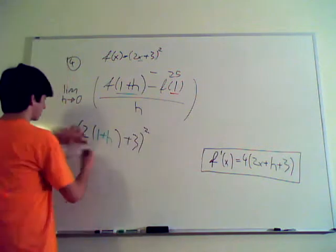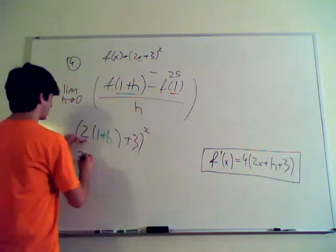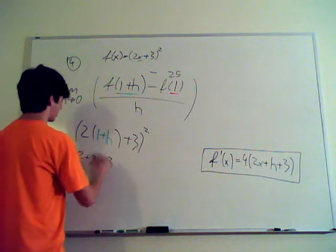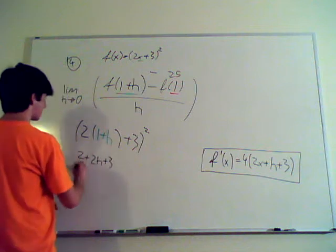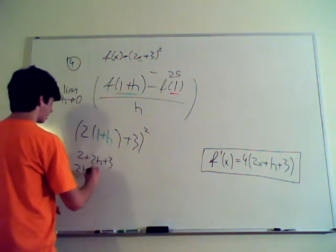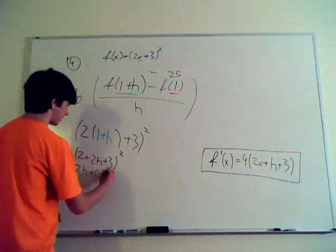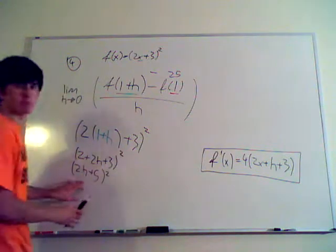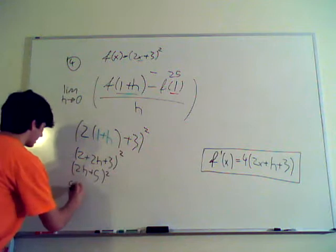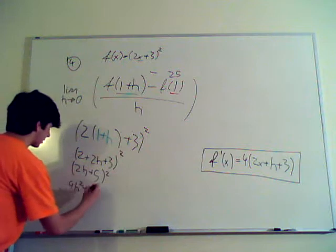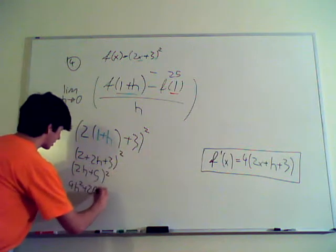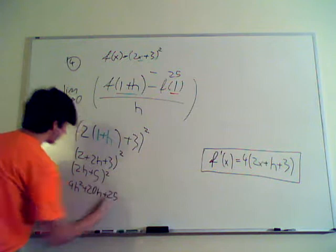Alright, so again, 2 plus 2h plus 3, which is the same thing. Oh, I thought that part, never mind. 2h plus 5 squared, both things. Which is, again, just simple boiling. 4h squared plus 1gh plus 1 to 5. Alright? That is, f prime of, 1 plus h.